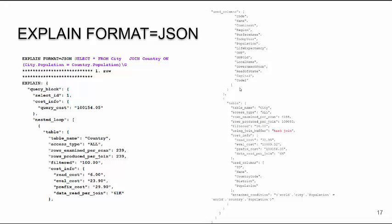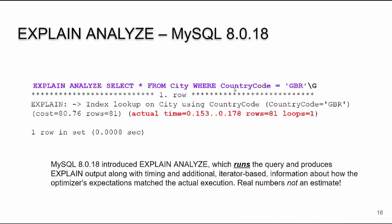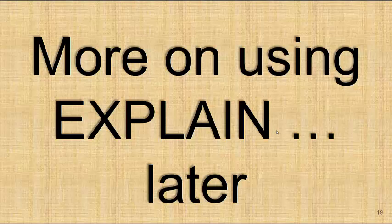With FORMAT=JSON you get a lot more information. For most of you starting out with query planning, this is overkill — eventually you'll work up into this. EXPLAIN ANALYZE came out a little over a year ago with MySQL 8.0.18. The previous EXPLAINs used statistical information, but EXPLAIN ANALYZE actually goes out and runs the query, giving you the actual time it takes and the actual performance. If you get a big difference between EXPLAIN ANALYZE and regular EXPLAIN, please run ANALYZE TABLE to update the stats.